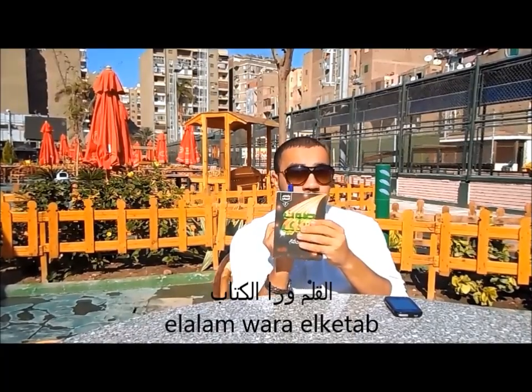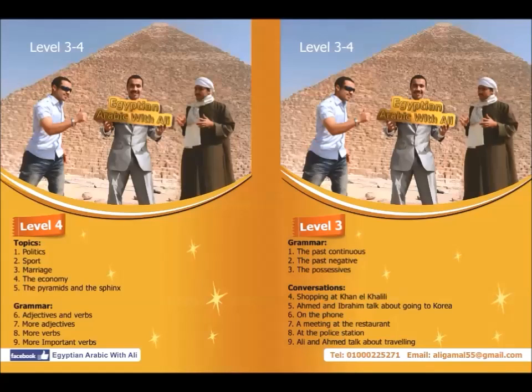For the DVD course for level 3 and level 4, level 3 has nine lessons and level 4 has nine lessons as well. Now let's see a small part for one of the lessons in level 3. Let's choose lesson number 2: the past negative.